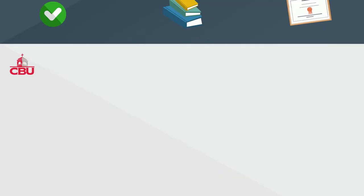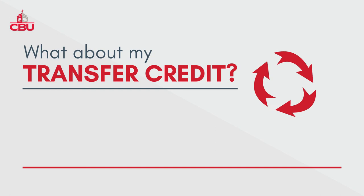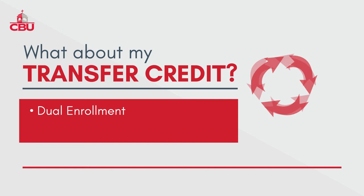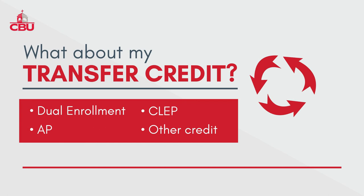Remember, all approved transferable credit will appear on your DegreeWorks page. If you have any type of transfer credit, including dual enrollment, AP, CLEP, or other forms of non-traditional credit, please verify that it all appears in your DegreeWorks page.